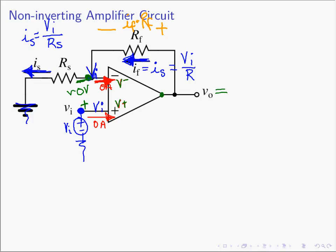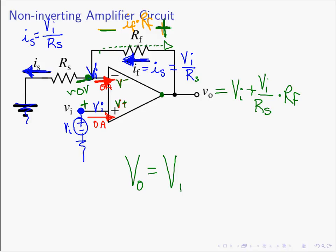Now we really have the answer we're looking for. What is the output voltage? I know that I started at a voltage here, which was VN or VI, and then if you were to progress to the right through the resistor, you would see an increase in energy. So how much does it go up? It goes up by IF, which is VI over RS, times RF. The way you normally see this written for the non-inverting amplifier circuit is: Vout equals VN times one plus RF over RS.